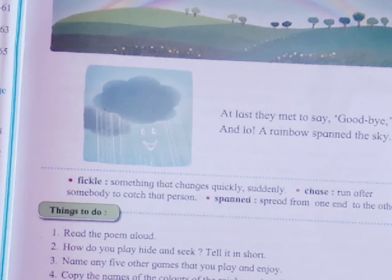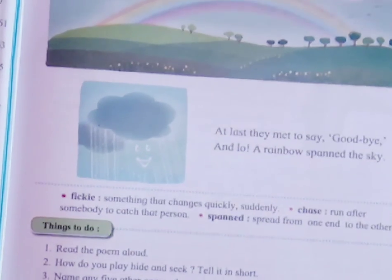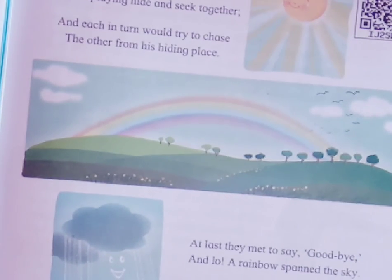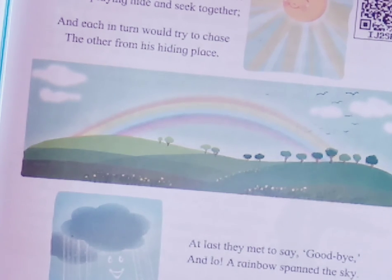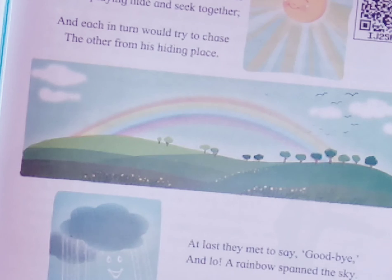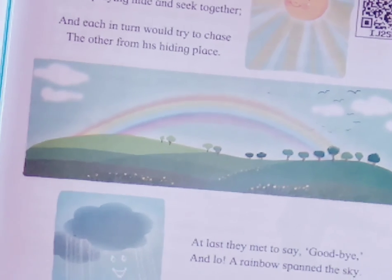Now see the rhyming words of the poem. First word: weather — rhyming word: together. Second word: chase — rhyming word: place. Third word: goodbye — rhyming word: sky.